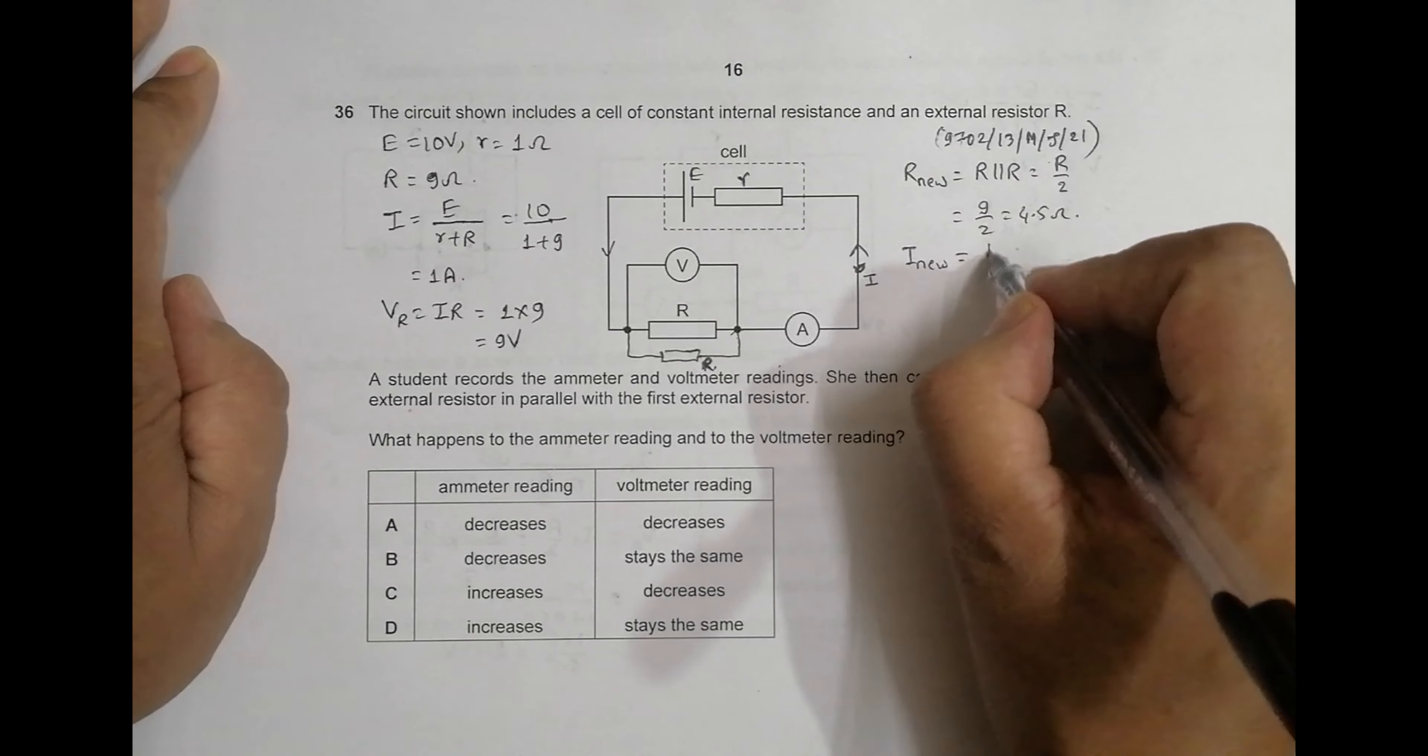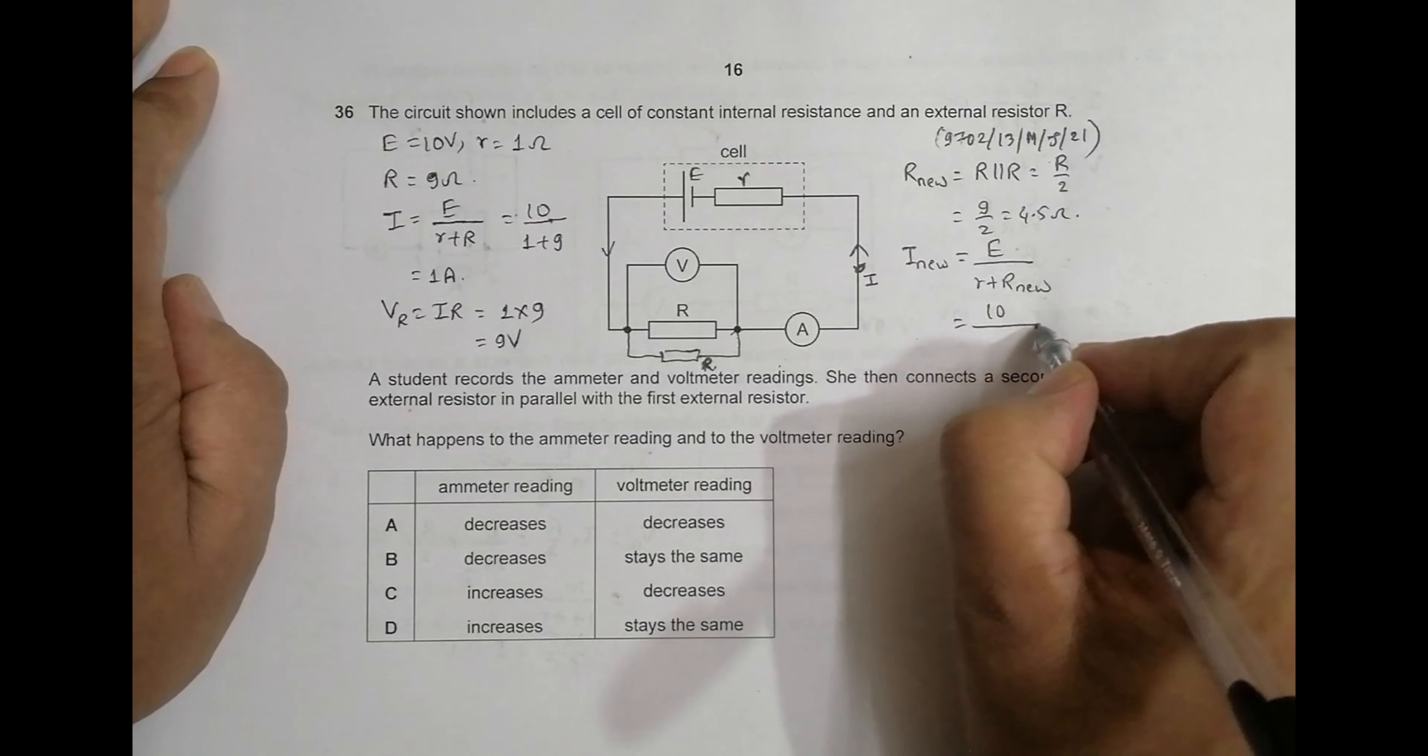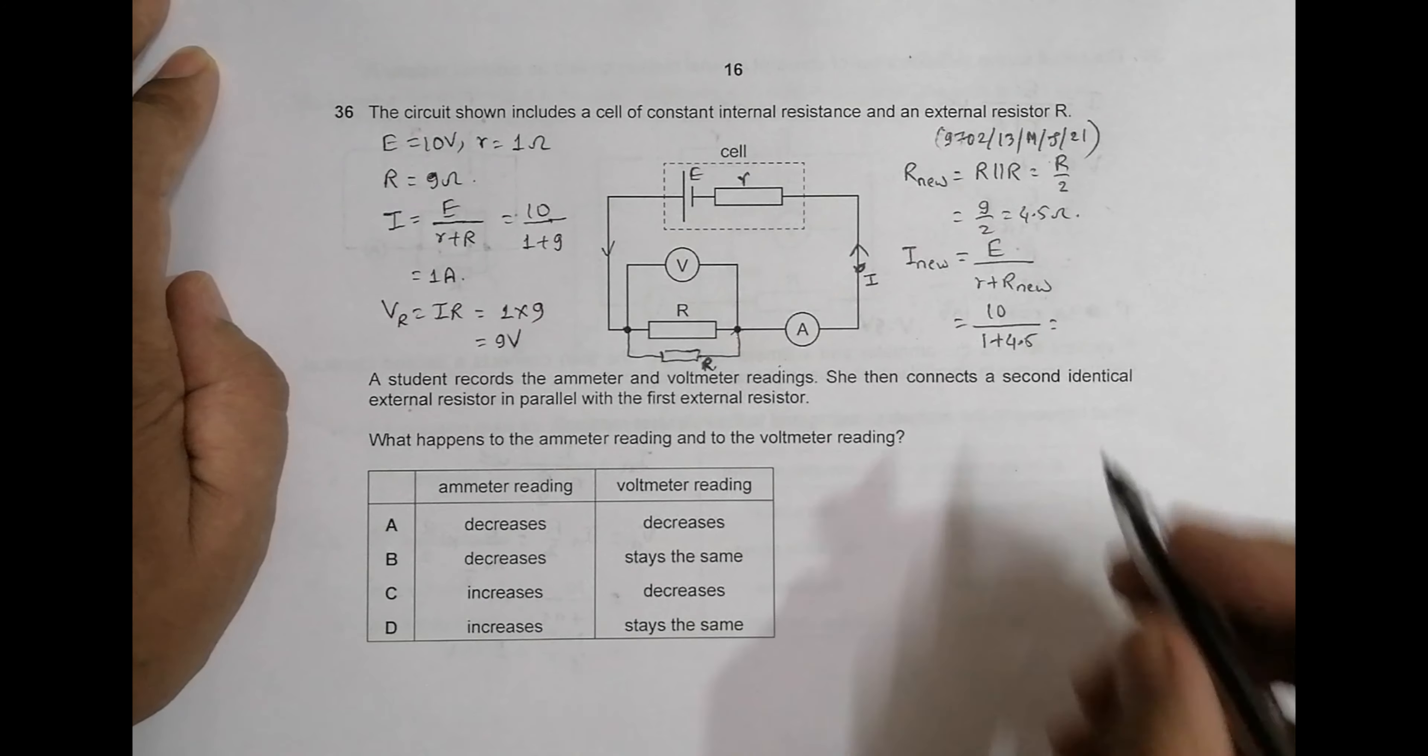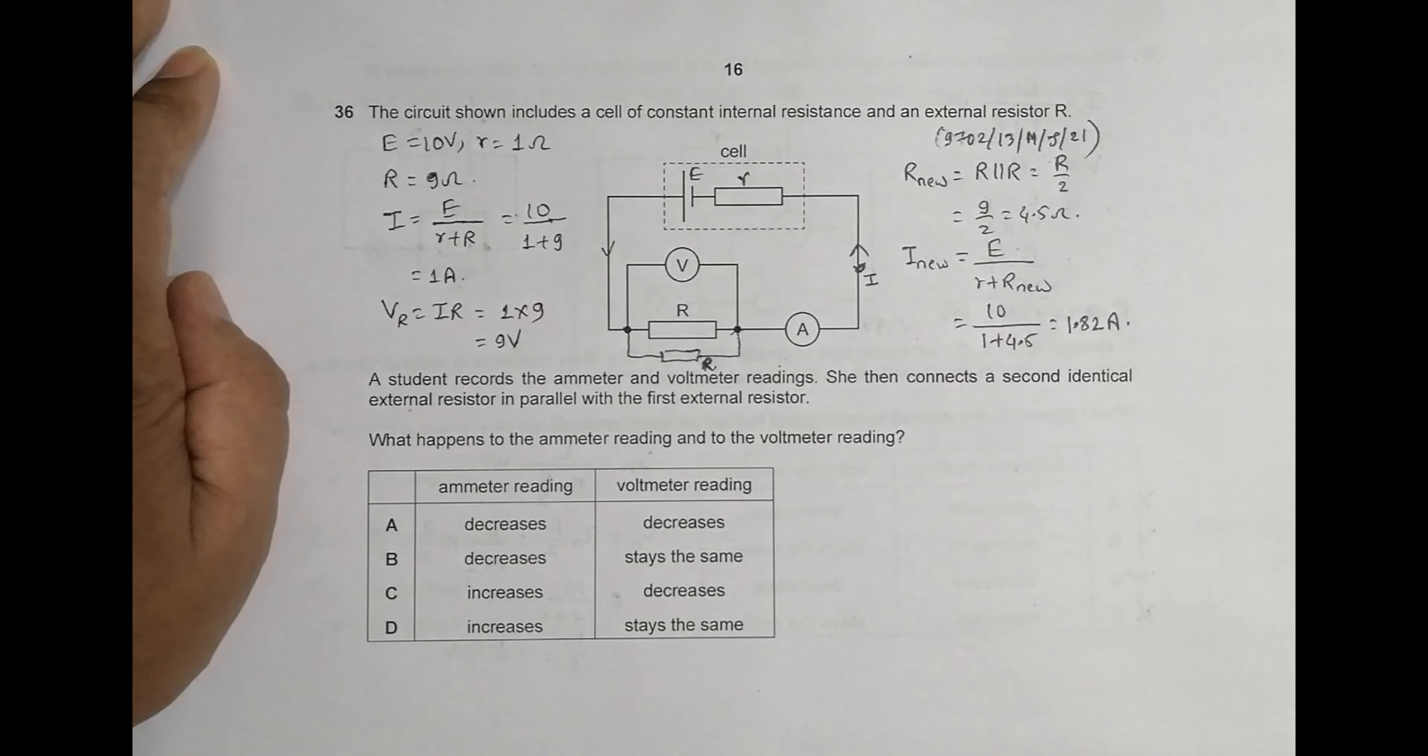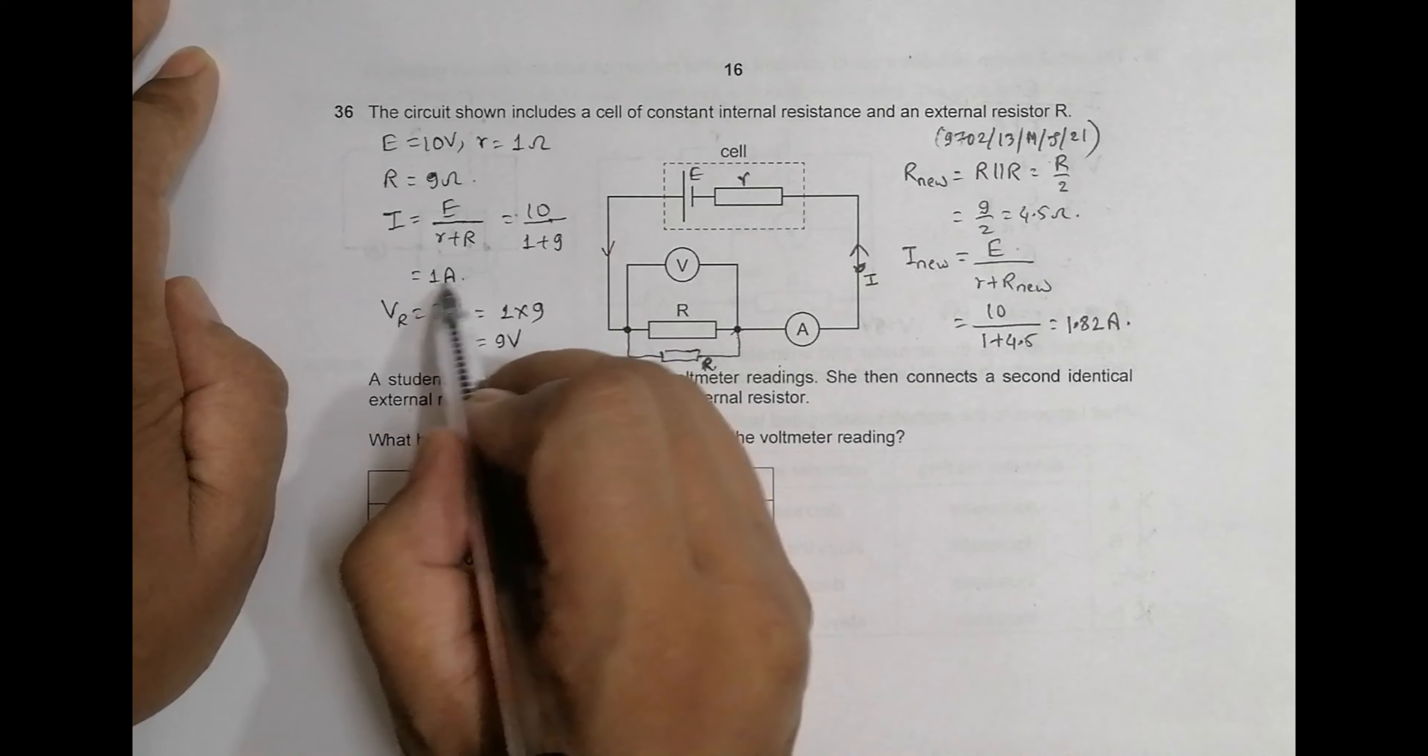So now the new current will be I_new equals E divided by small r plus R_new. That's equal to 10 divided by 1 plus 4.5, so the denominator will be 5.5. So it is 10 divided by 5.5, which will be equal to 1.82 amperes. So now the current has increased—the current was 1 ampere, now it is 1.82 amperes, it has increased.